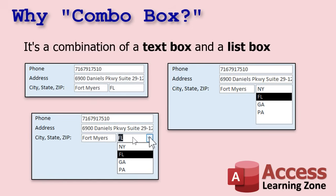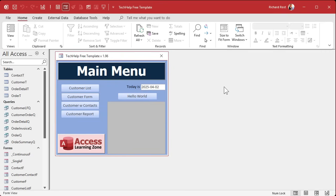With a combo box you can drop the box down and pick from a list, or you can type in a value if the designer allows it. You can set it so users have to pick from the list, or you can allow them to type in their own values. Access does not have just a basic drop-down — everything like this is called a combo box, so now you know the terminology.